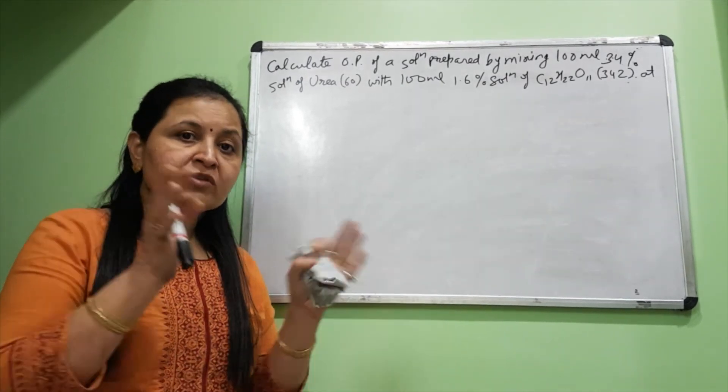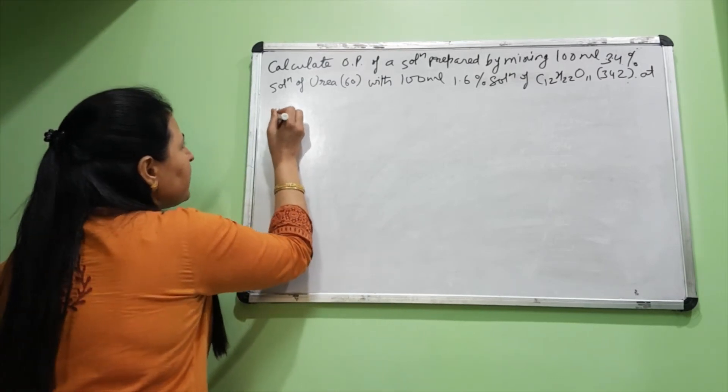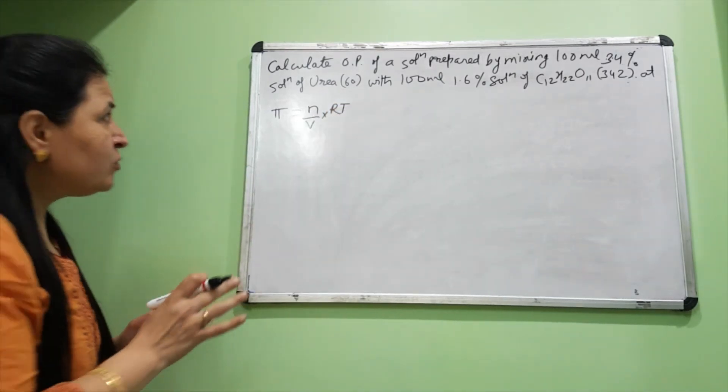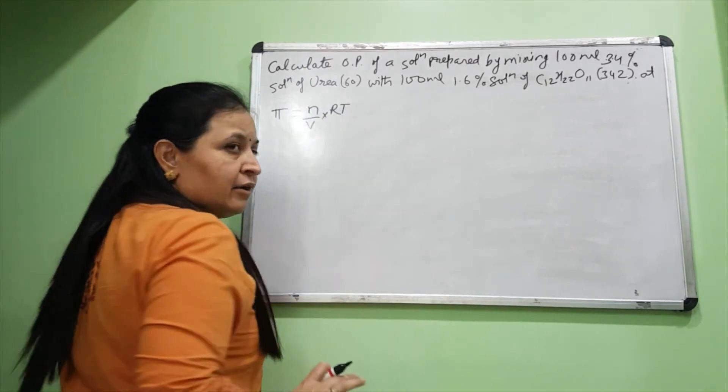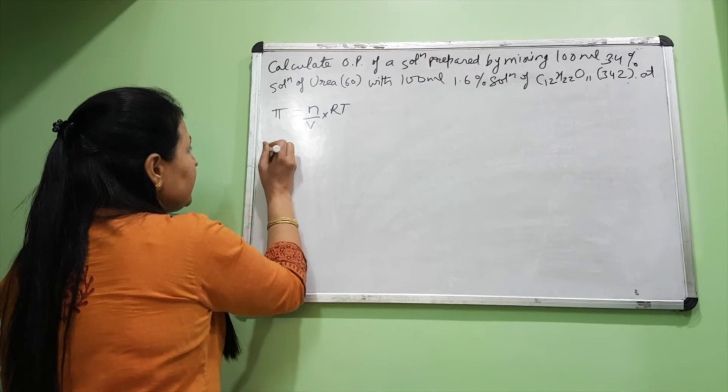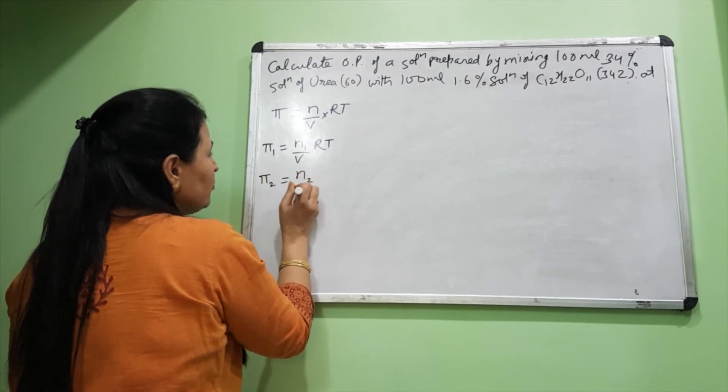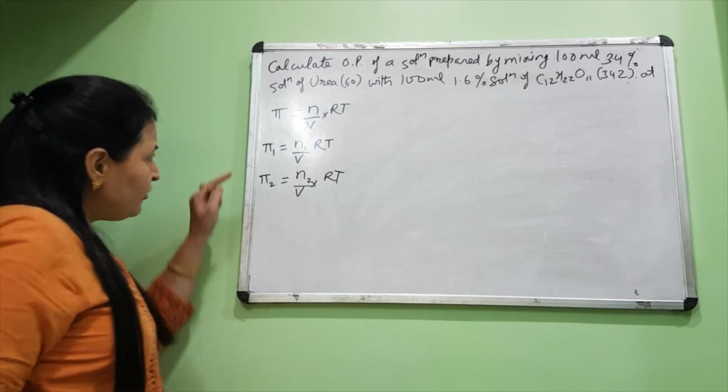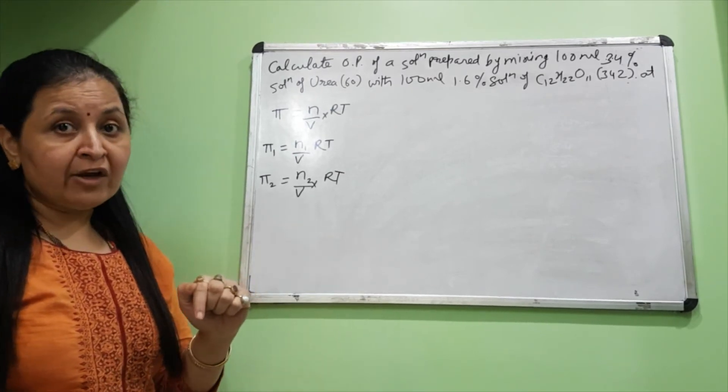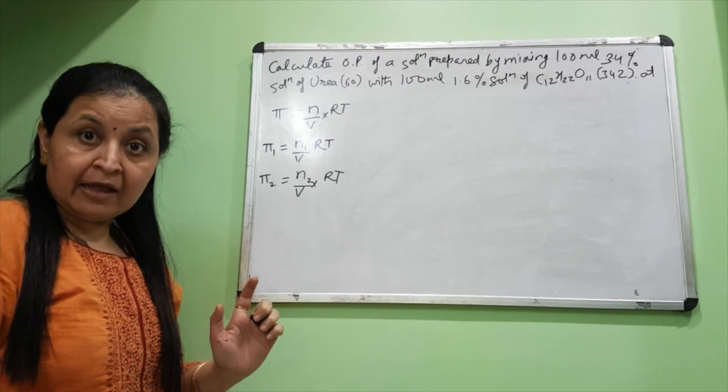You need to find the osmotic pressure of a solution made by mixing two solutions. First, let's convert our formula according to the given data. Our formula was π = (n/V)RT. Now the solution has two solutes, so we'll have two number of moles. For the first solution, π₁ = (n₁/V)RT, and for the second solution, π₂ = (n₂/V)RT. The V is the total volume of the solution: 100 ml plus 100 ml makes 200 ml. This is common for both. R is a universal constant, it's the same. Both are at 20 degrees, so temperature is also the same.